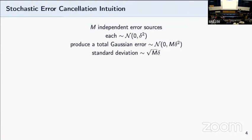Before going through the results, I would like to first provide some intuition about how the cancellation process works. First, let's assume we have m independent error sources, which essentially are modeling the qubit errors. If we say each error source follows a Gaussian distribution with mean zero and variance delta squared, this means that the cumulative error is a total Gaussian error with mean zero but m delta squared variance. This means that the total error has a standard deviation of square root m times delta.